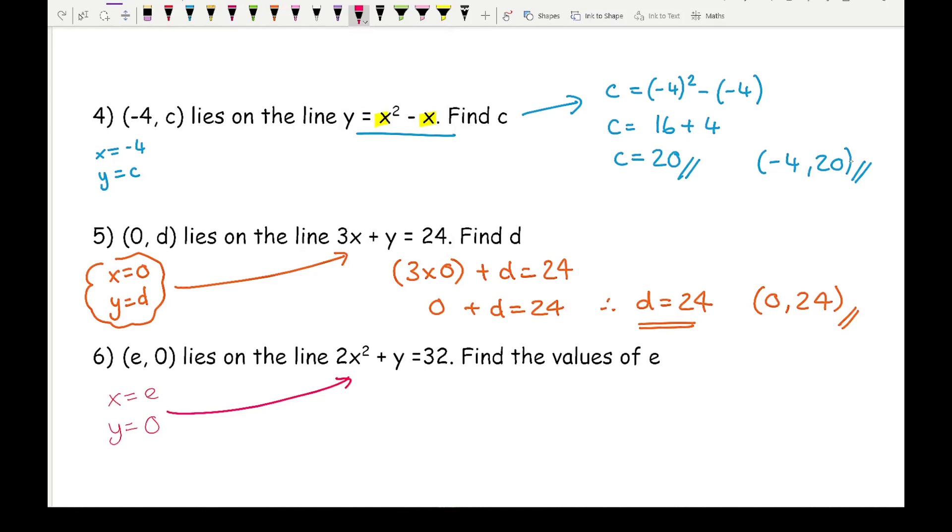So I've got 2e squared equals 32. Take the 2 over to the other side, and I get e squared equals 16.